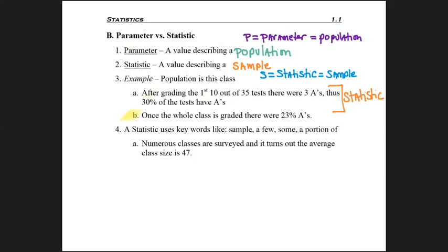And in the second case, once the whole class is graded, there were 23% A's. This is a parameter because I've said the whole class was graded.